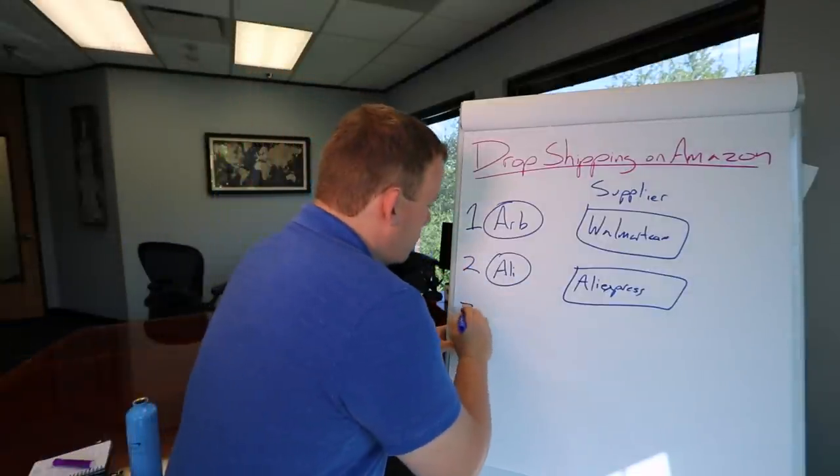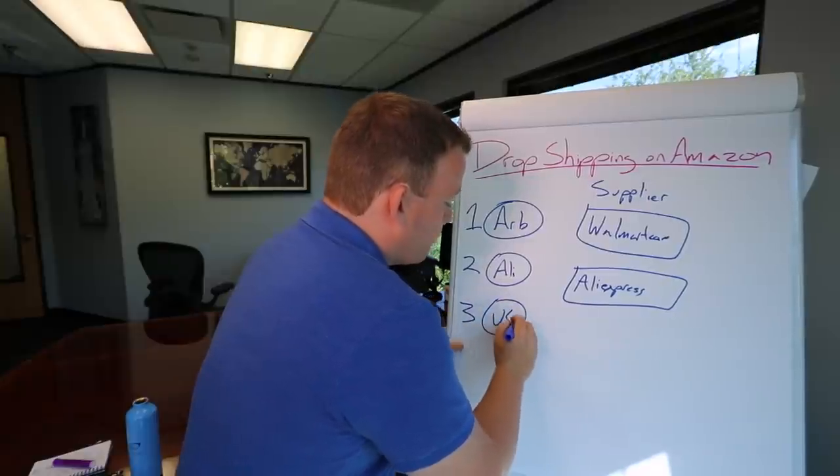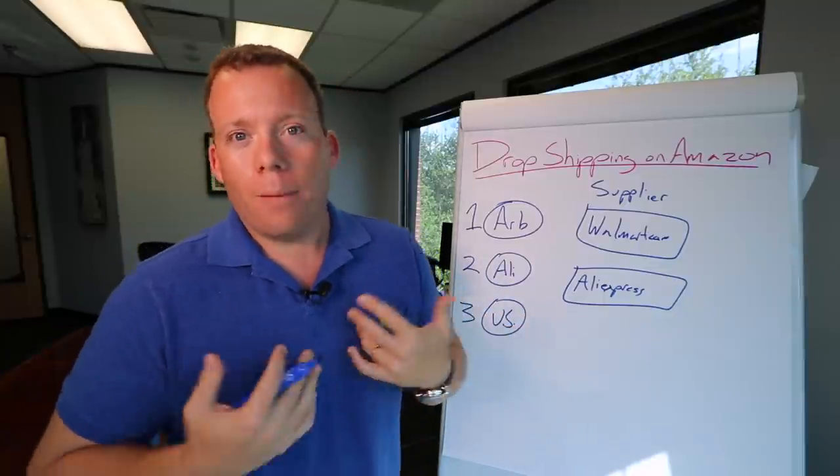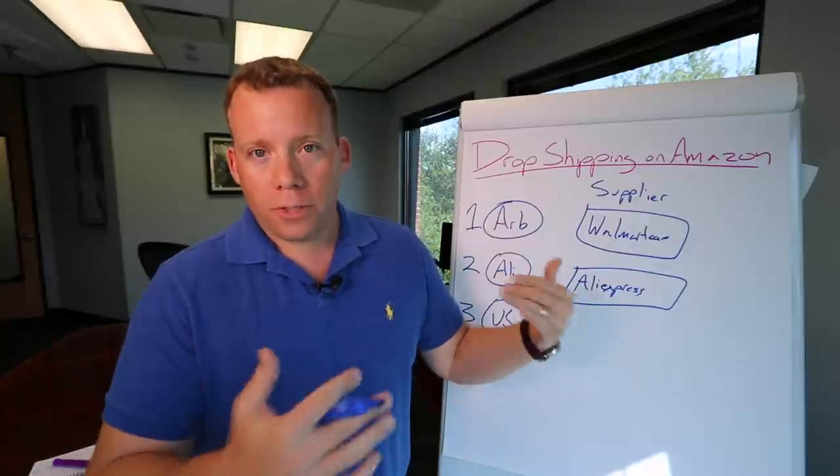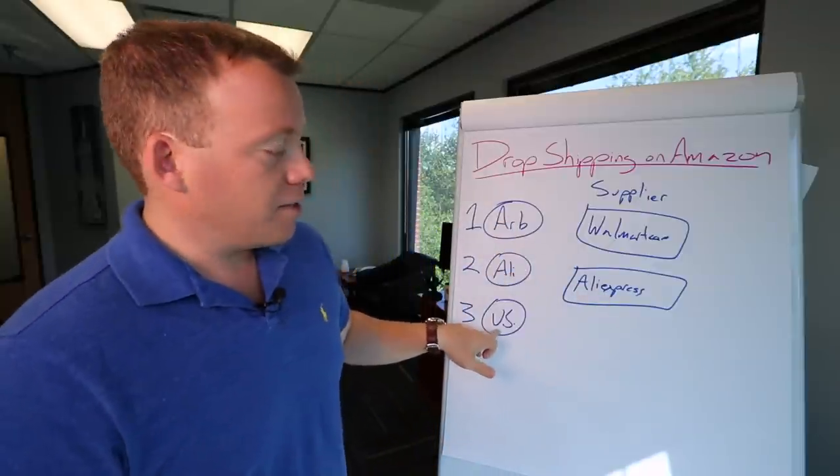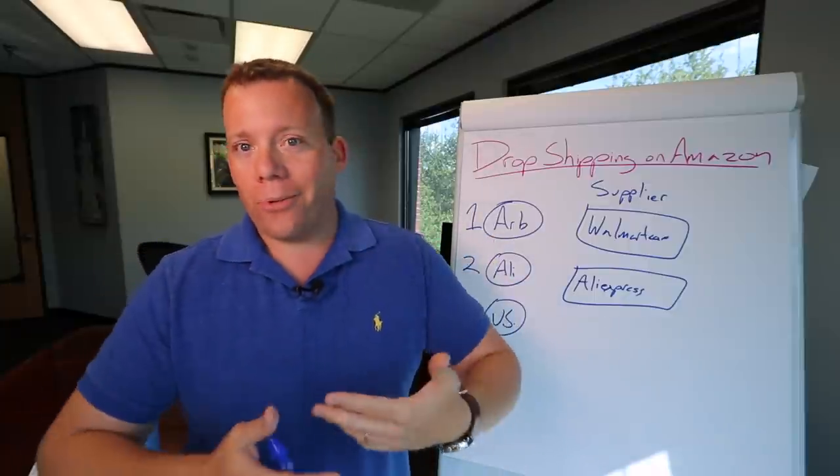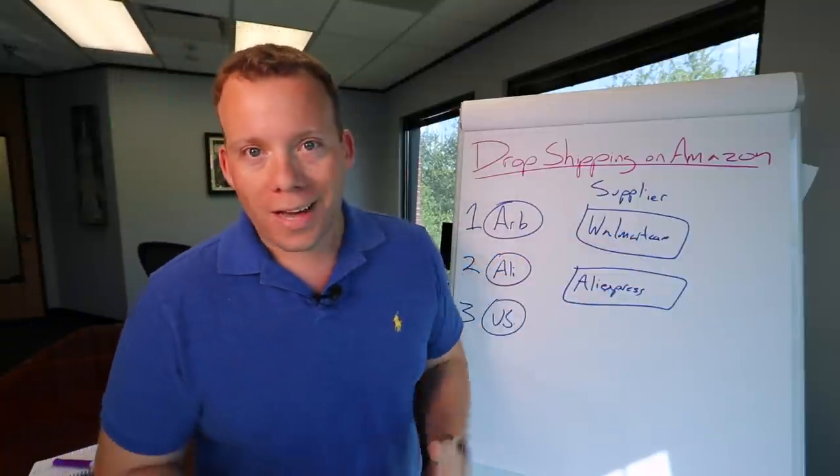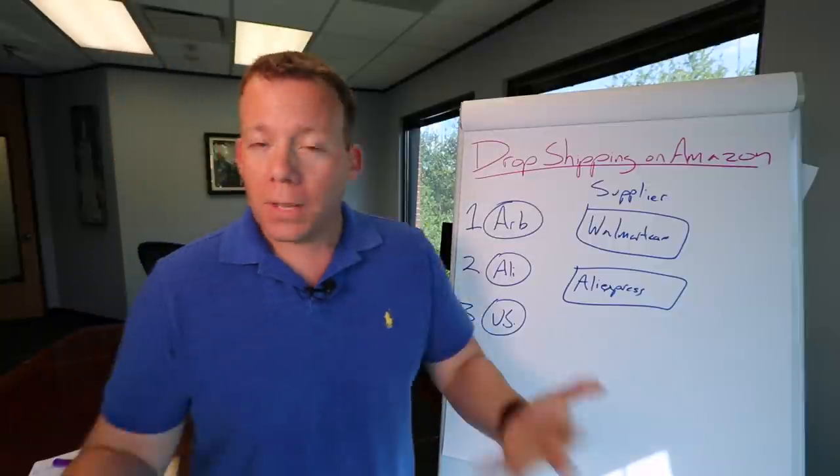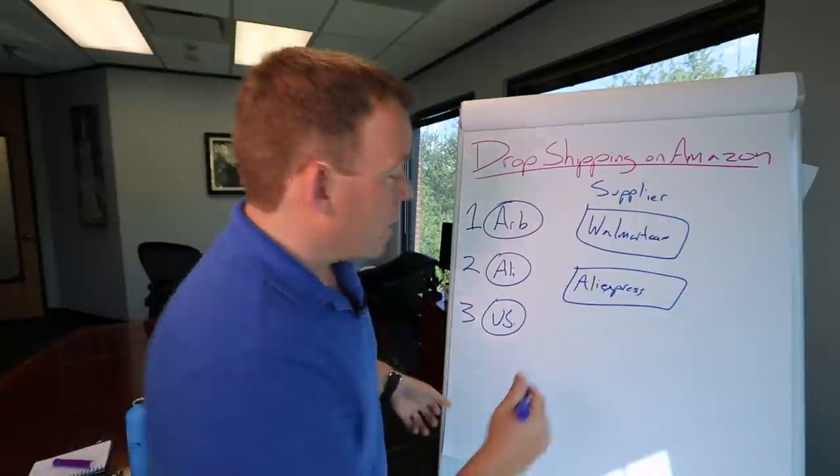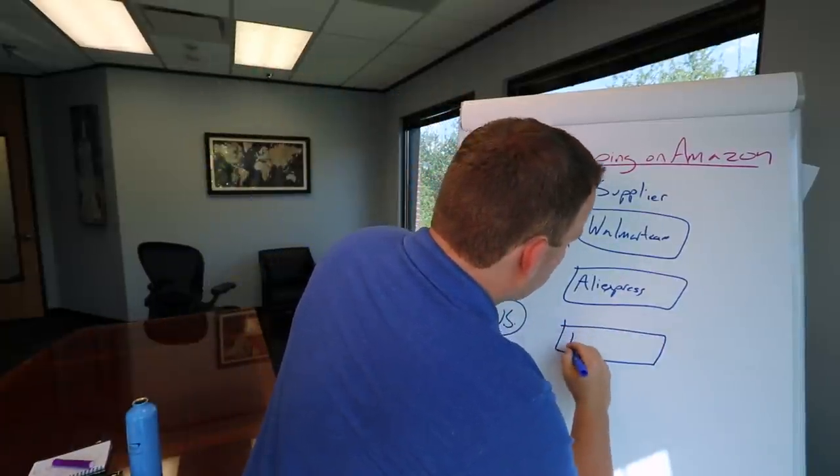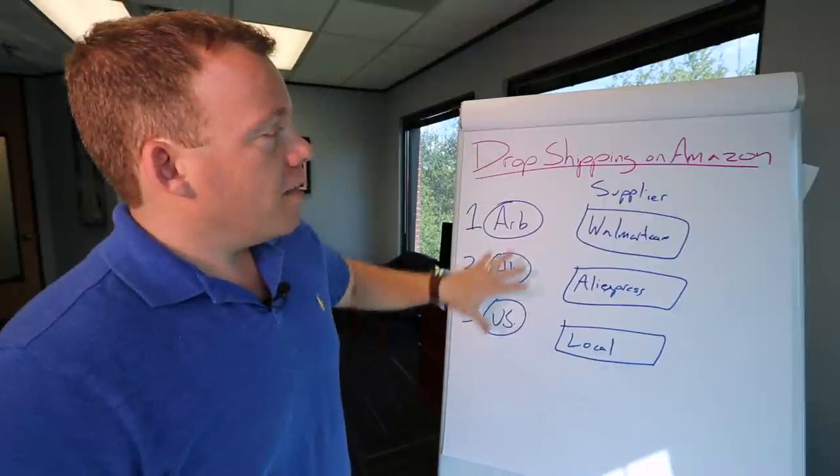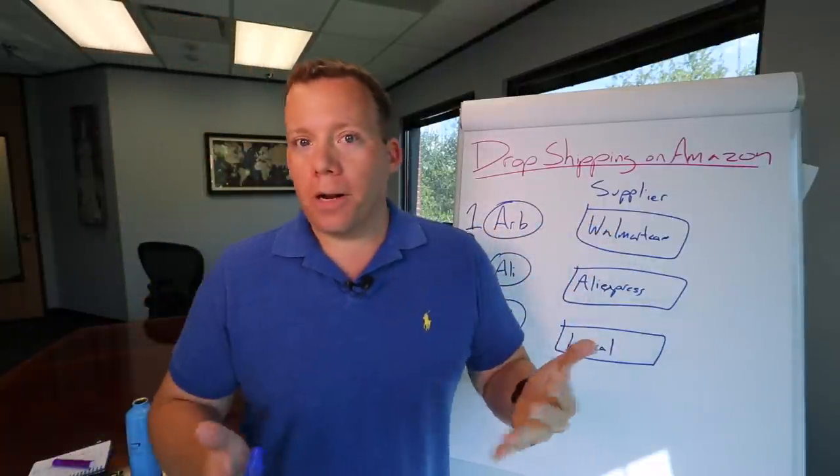Number three is what I'm going to call US. What I really mean is domestic suppliers. So I'm from the States, my businesses are in the States, we sell for suppliers that are in the States. If you're watching this right now and you're in Australia, then this would be Australia. Basically, you're not drop shipping from overseas, you're not drop shipping from a walmart.com or a site like that, but you're actually selling for suppliers that are in your country, wherever that may be.